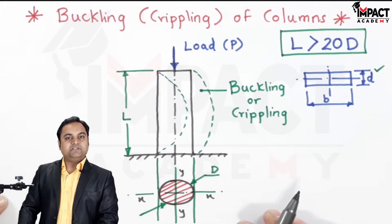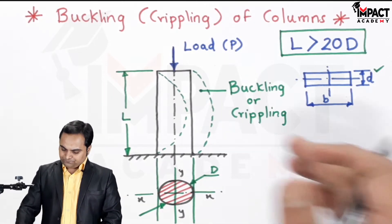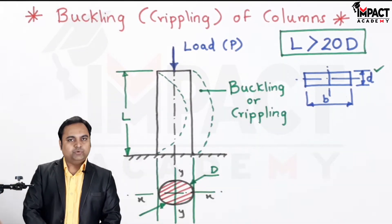This is called as the buckling or crippling column. It may be from any given side, either towards the right or towards the left.